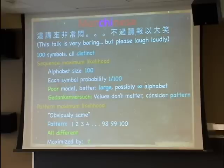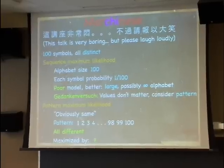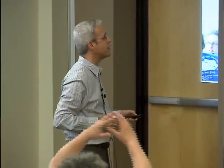The pattern of 100 distinct symbols is simply 1, 2, 3, ..., 100, meaning all elements are different. Which distribution maximizes the probability of this pattern? A uniform distribution over a very large — possibly infinite — number of elements, because with a billion-element uniform distribution, 100 samples will almost certainly all be distinct. So what we thought should be the same is actually different, and it works better for very large alphabets.